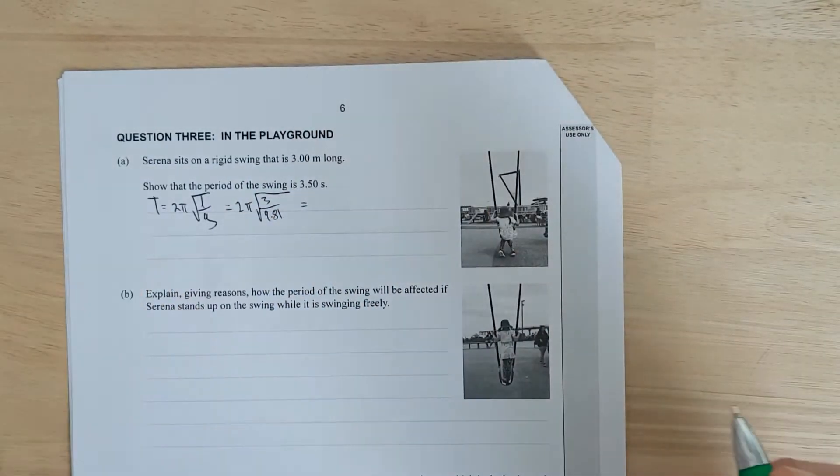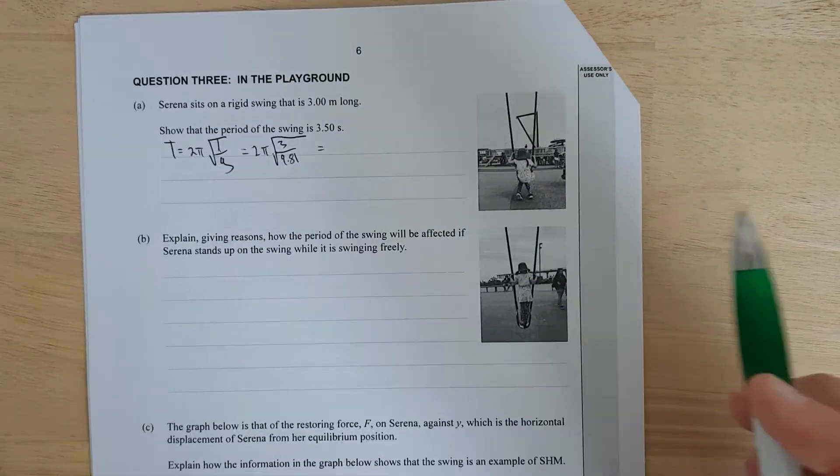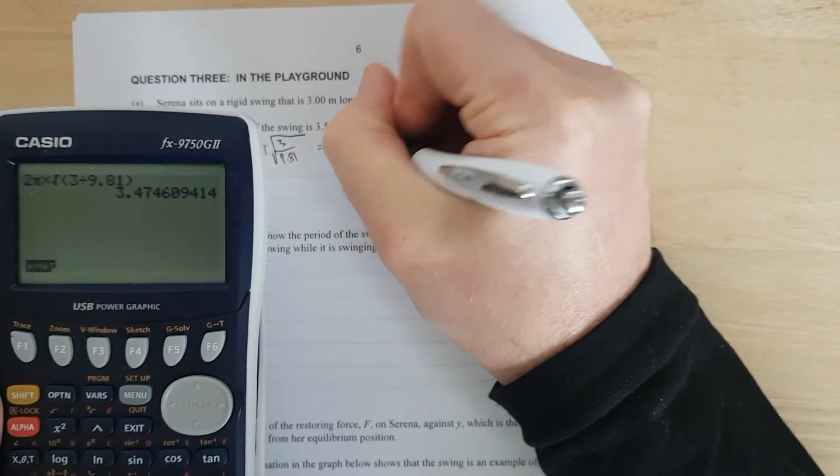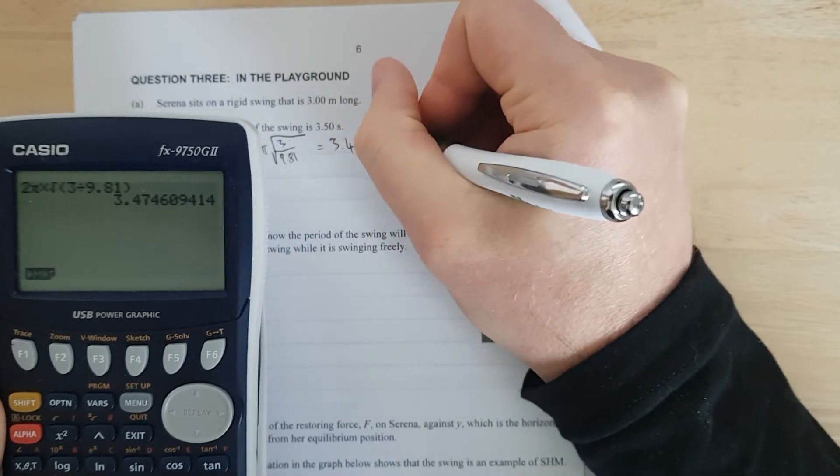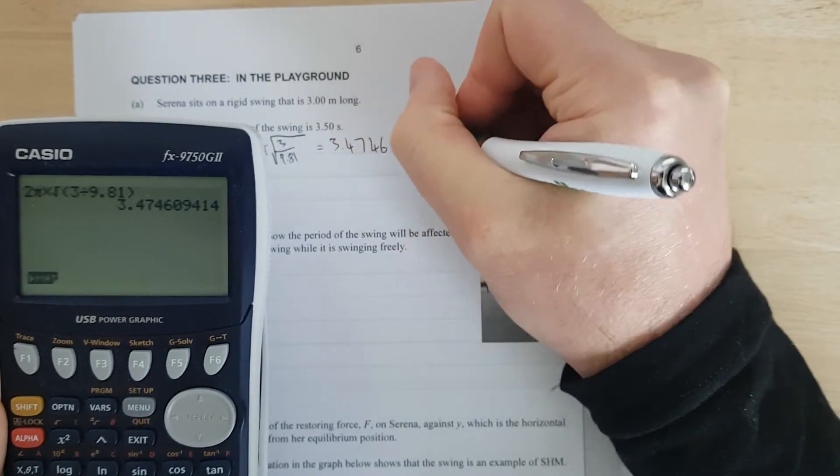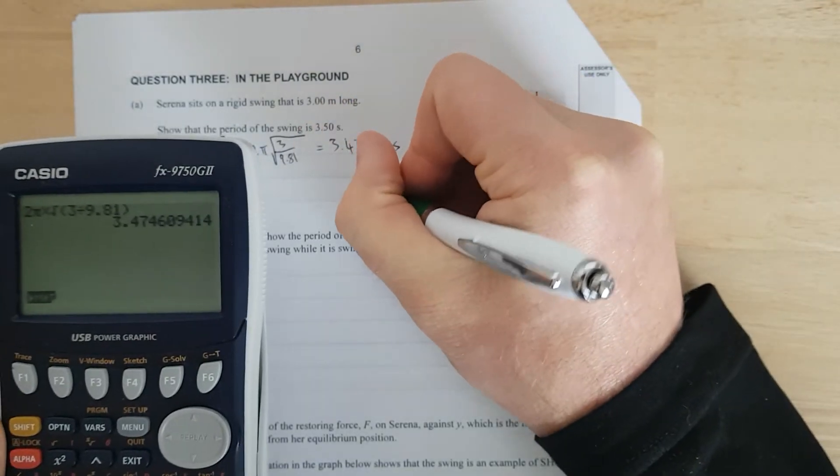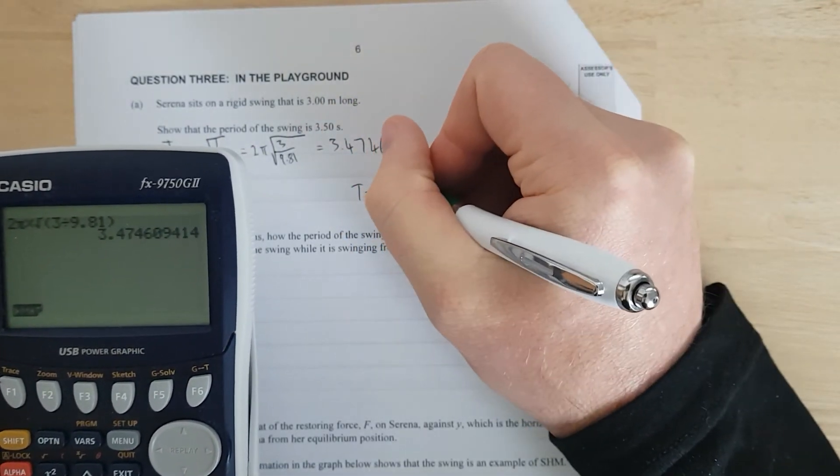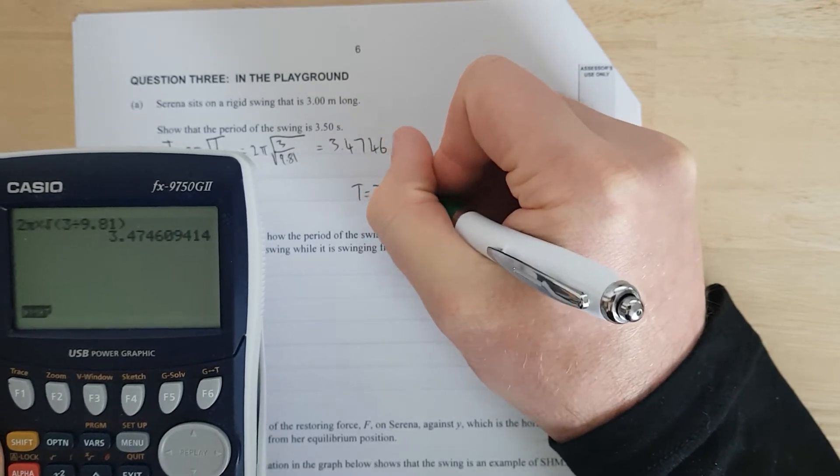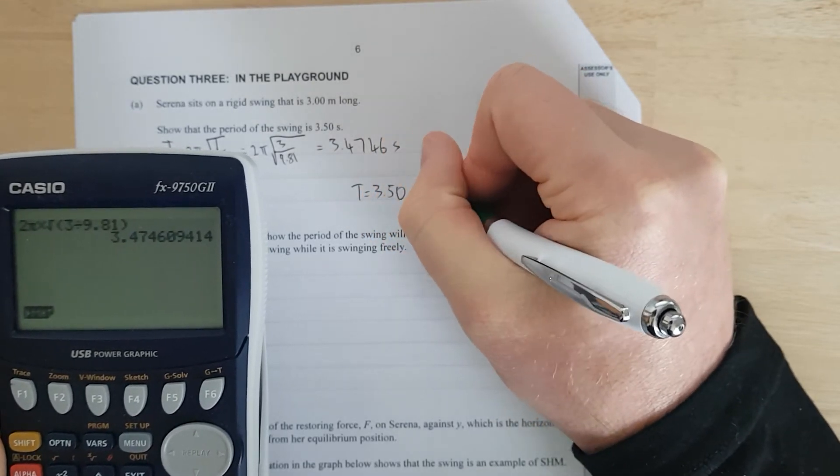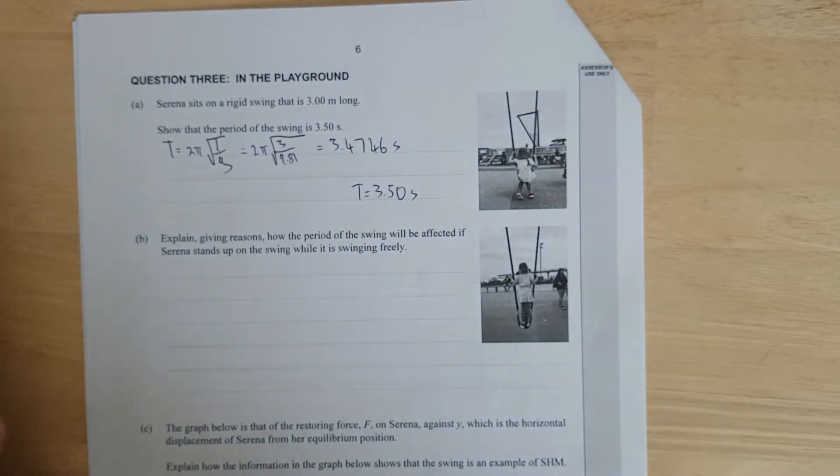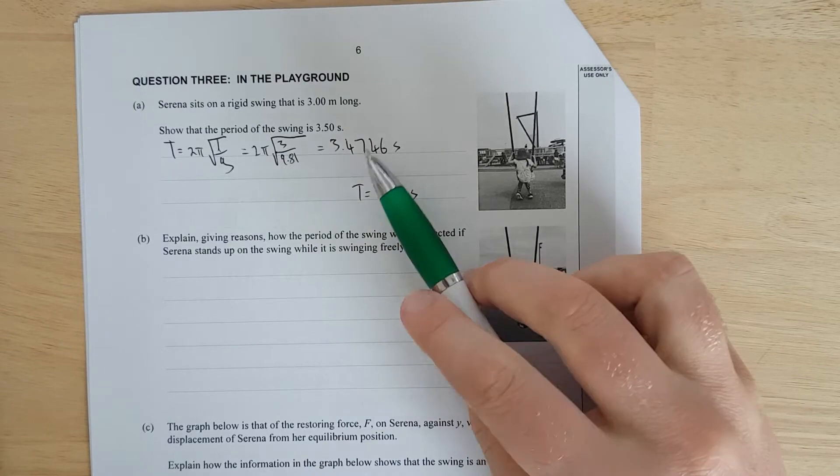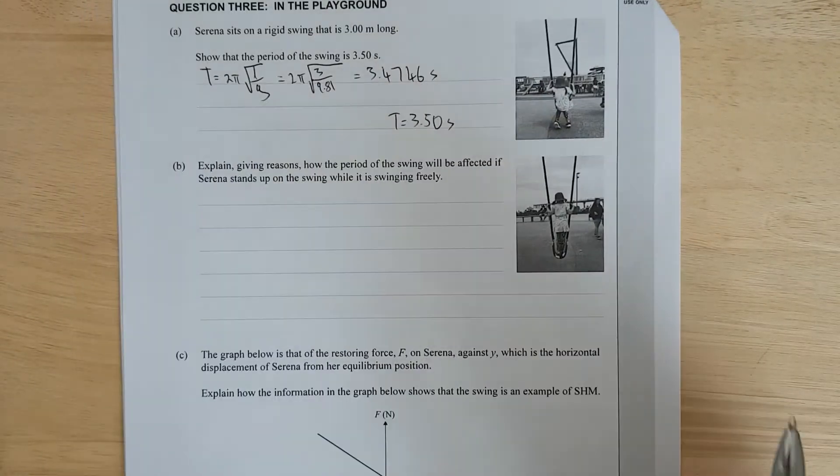Then you've got to have the working square root 3 over 9.81. If you'd done the internal 3.1, you would have done pendulums to death. So you should know this formula off by heart. So we get 3.4746 seconds. And then obviously we round it, because that number makes no sense, because it's not the correct SF. They give it 3.5. 3.50 seconds. Just literally just give what they give. This is NCEA for you.